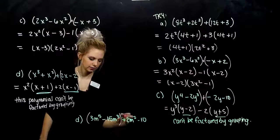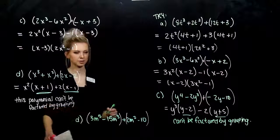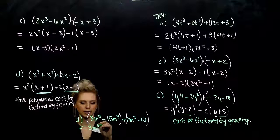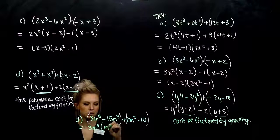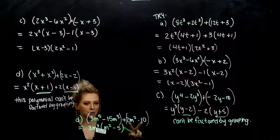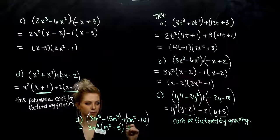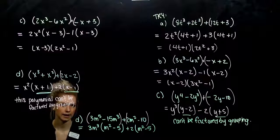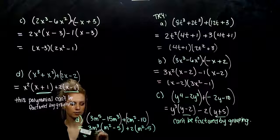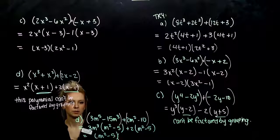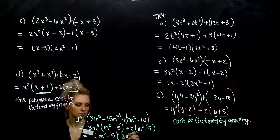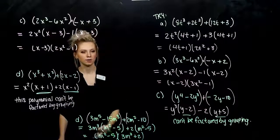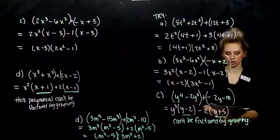Last one. Group the first two and the last two. Common between the first two: 3m³, leaving m² minus 5. Common between the second two: a factor of positive 2, leaving m squared minus 5. Common between these two: m squared minus 5. Take it out and what's left over? 3m³ plus 2. We can always check by foiling it back out to make sure we get back to the original four-term polynomial.